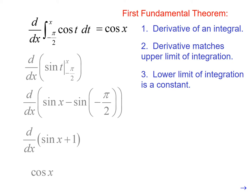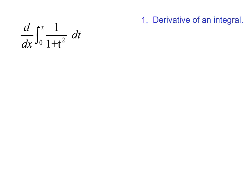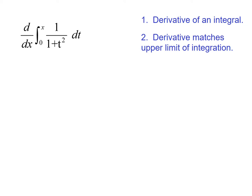We have the derivative of an integral. The variable in the derivative matches the variable in the upper limit, and the lower limit of integration is a constant. So we get 1 over 1 plus x squared.